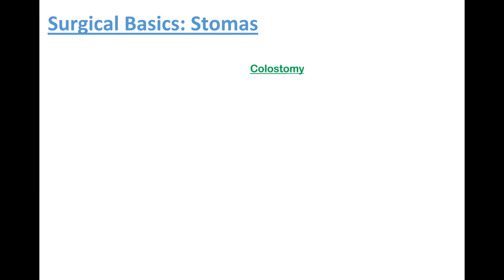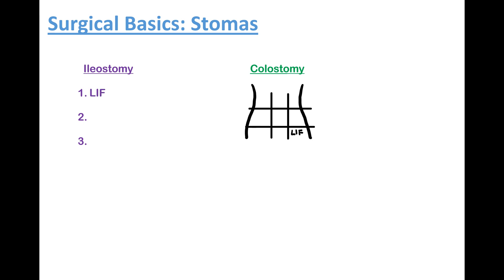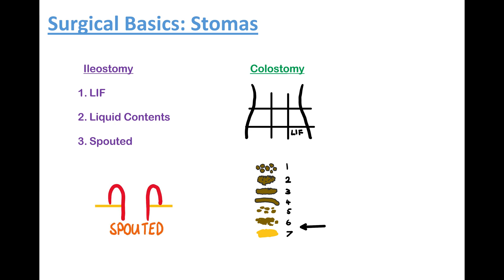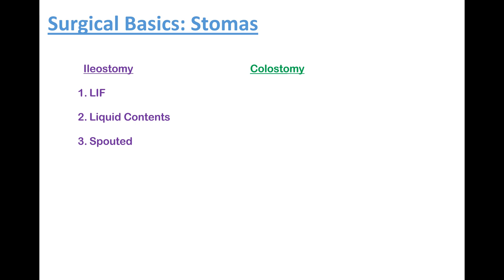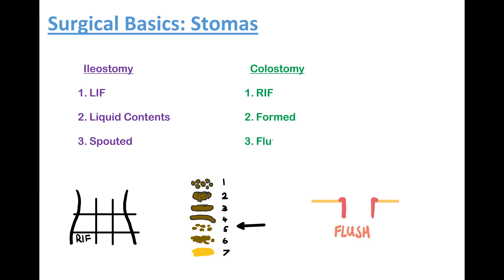One commonly asked question is how to tell the difference between a colostomy and an ileostomy. There are three ways to tell them apart. Ileostomies are in the left iliac fossa, they have liquid contents, and they're spouted — meaning that the bowel wall is averted on itself, allowing you to wrap a bag around it without the liquid stool contacting the skin, which prevents dermatitis. Colostomies, on the other hand, are in the right iliac fossa, have formed stools, and they're flush with the skin.